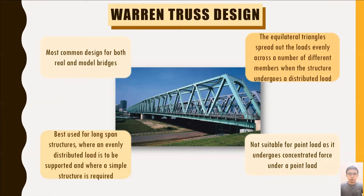The equilateral triangles can spread out the loads uniformly across a number of different members. When the structure undergoes a discrete load, the triangles are engaged, which contributes to the strength of the structure. When a straining force is applied to the bridge, the design of the Warren truss ensures that there is no bending occurring to the ties, struts, and beams of the bridge. In detail, the triangles will absorb the compression and tension and transmit them from one side to the other. To conclude, Warren truss design is recommended for long-span structures where an evenly distributed load is to be supported and a simple structure is required.